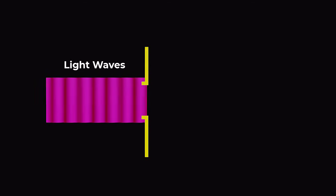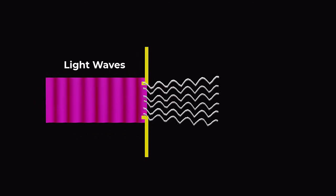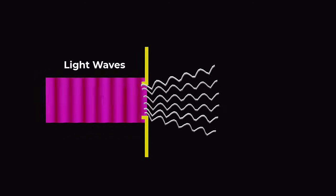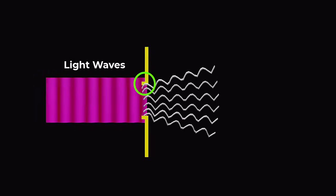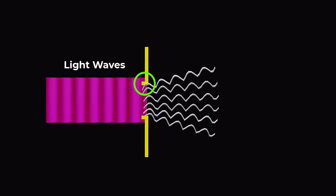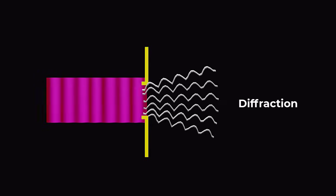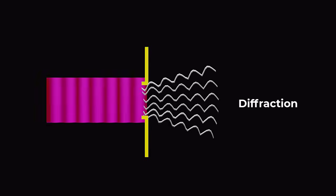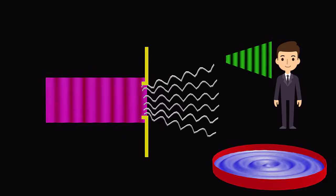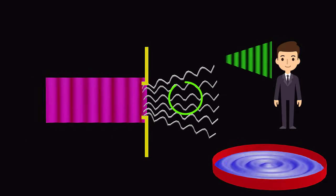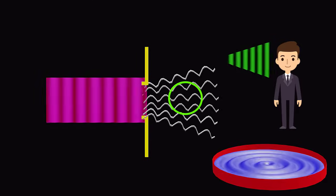When light waves encounter an obstacle or pass through a narrow opening, the light waves bend around the edges of the obstacle or opening and spread out — this phenomenon is called diffraction. Diffraction can be observed with all types of waves, including sound waves, water waves, and electromagnetic waves such as light.